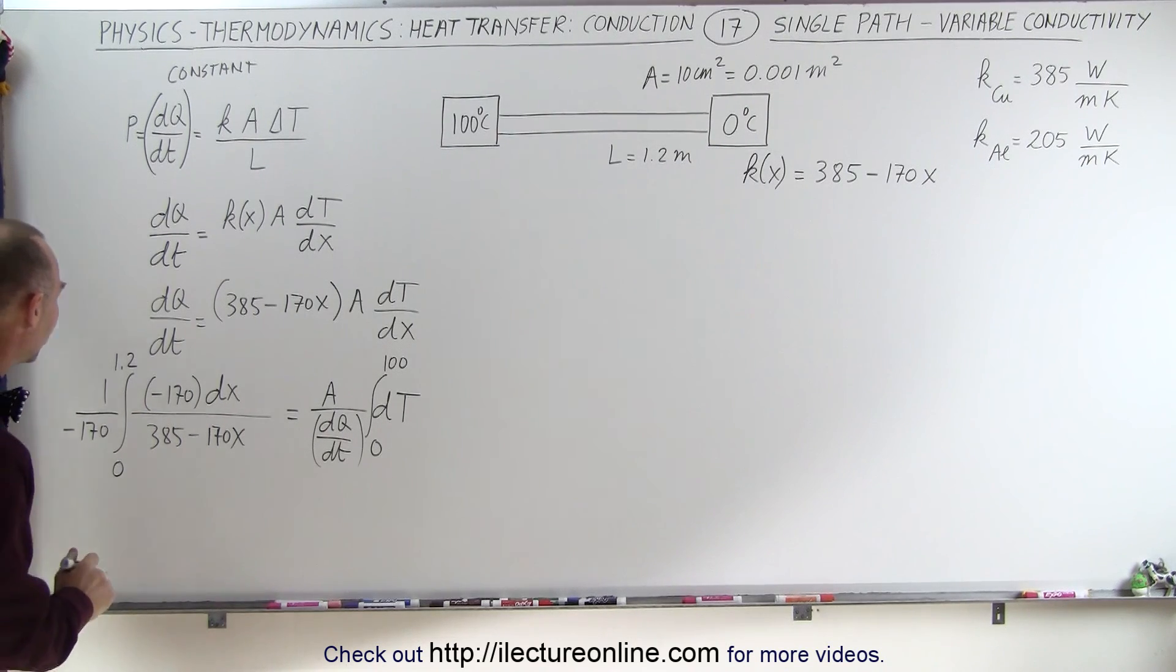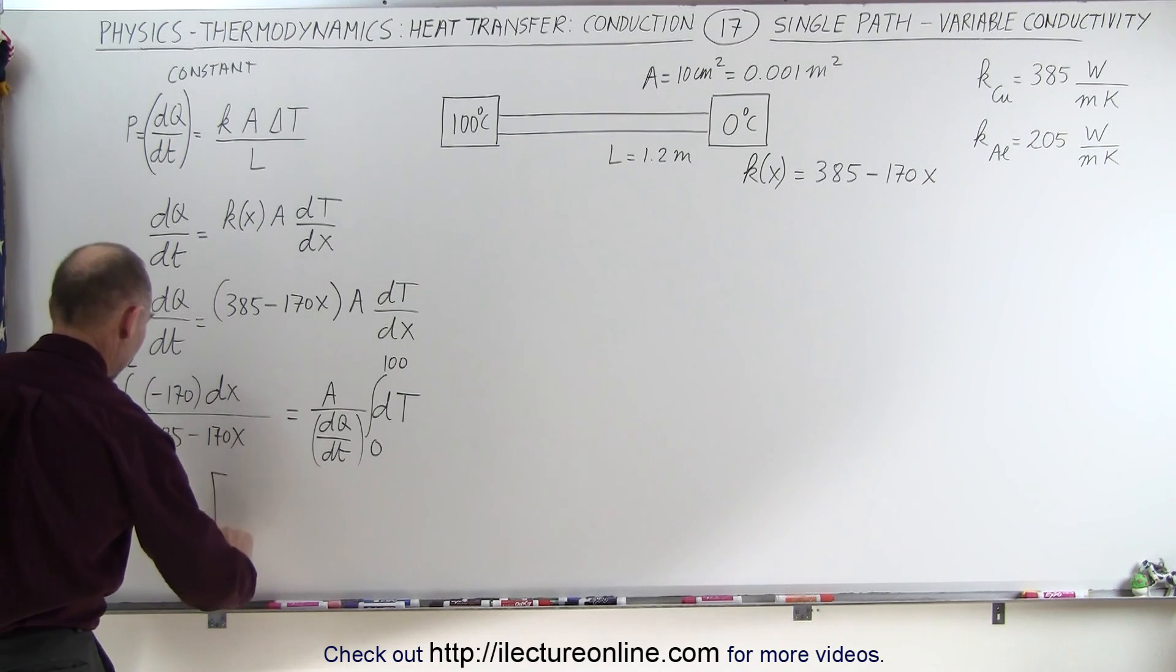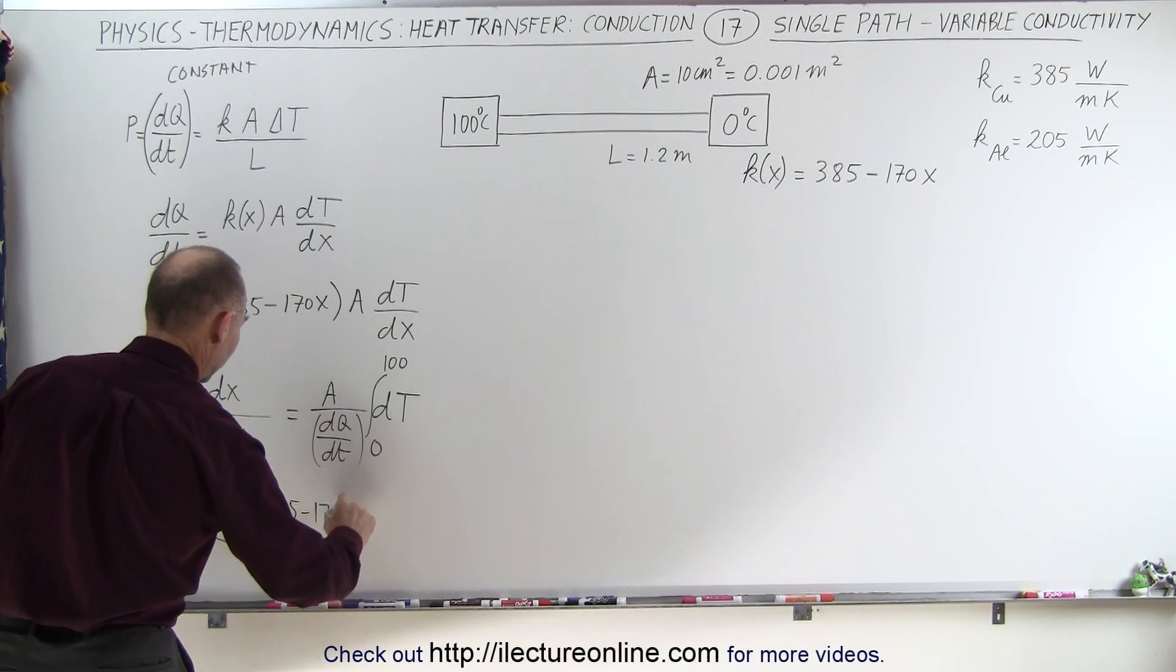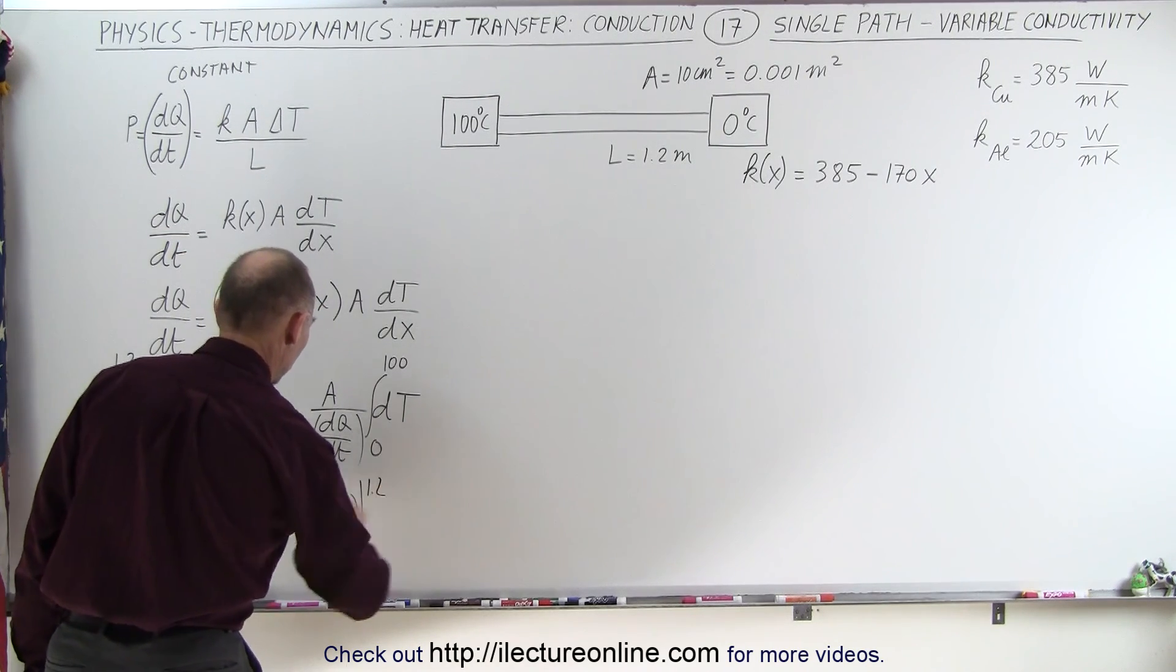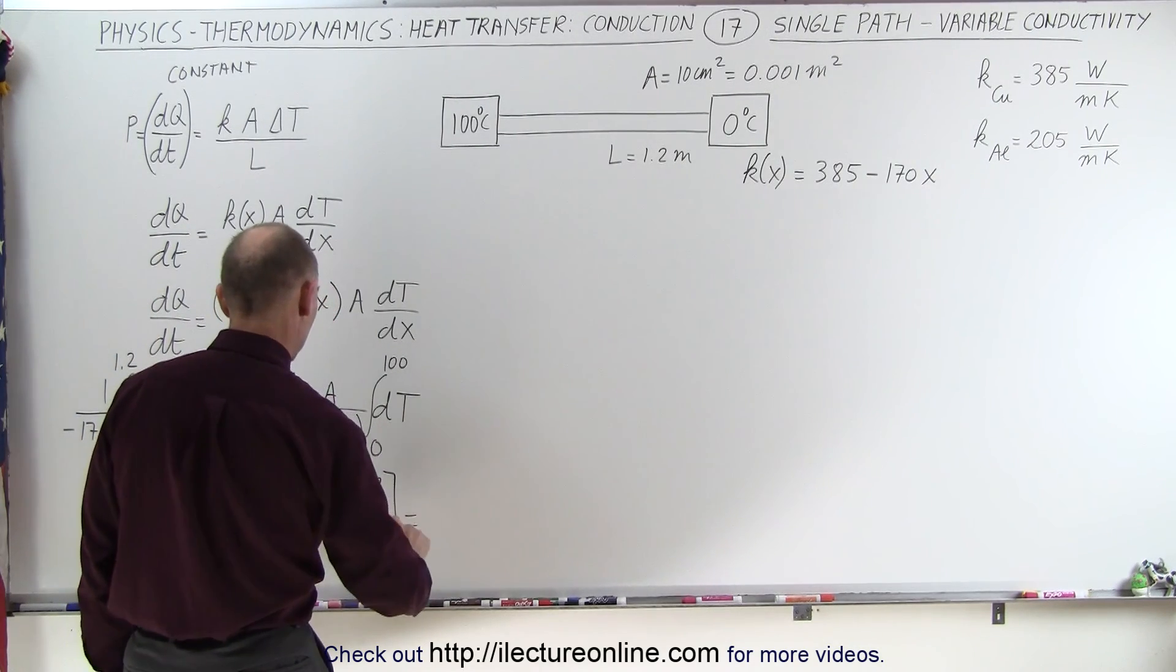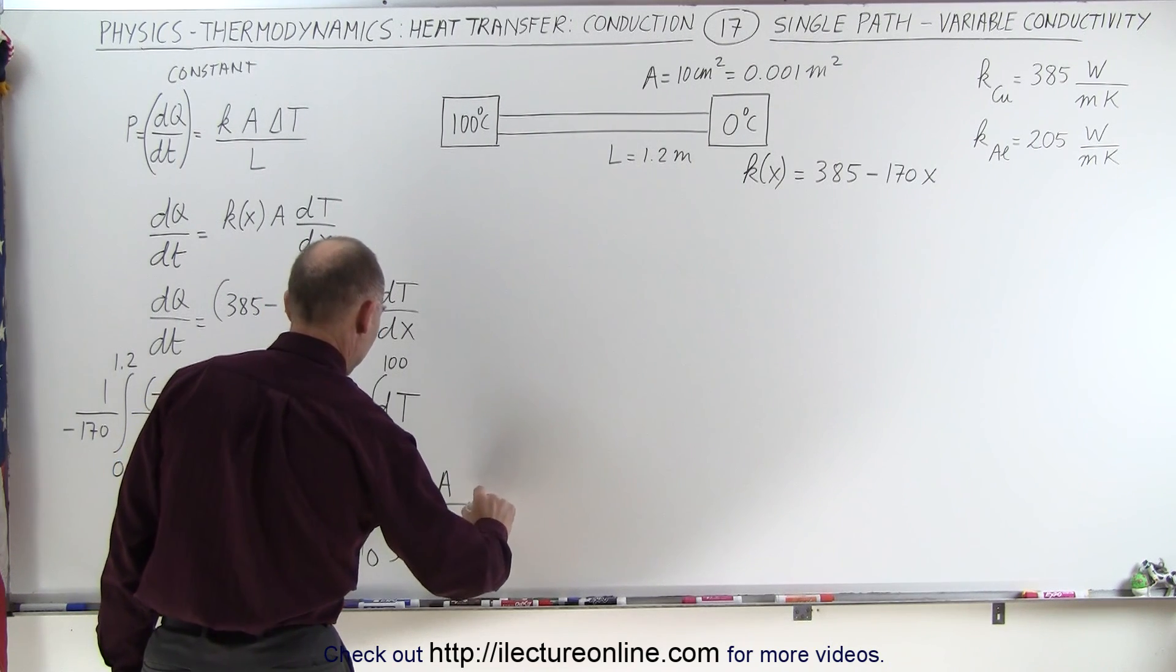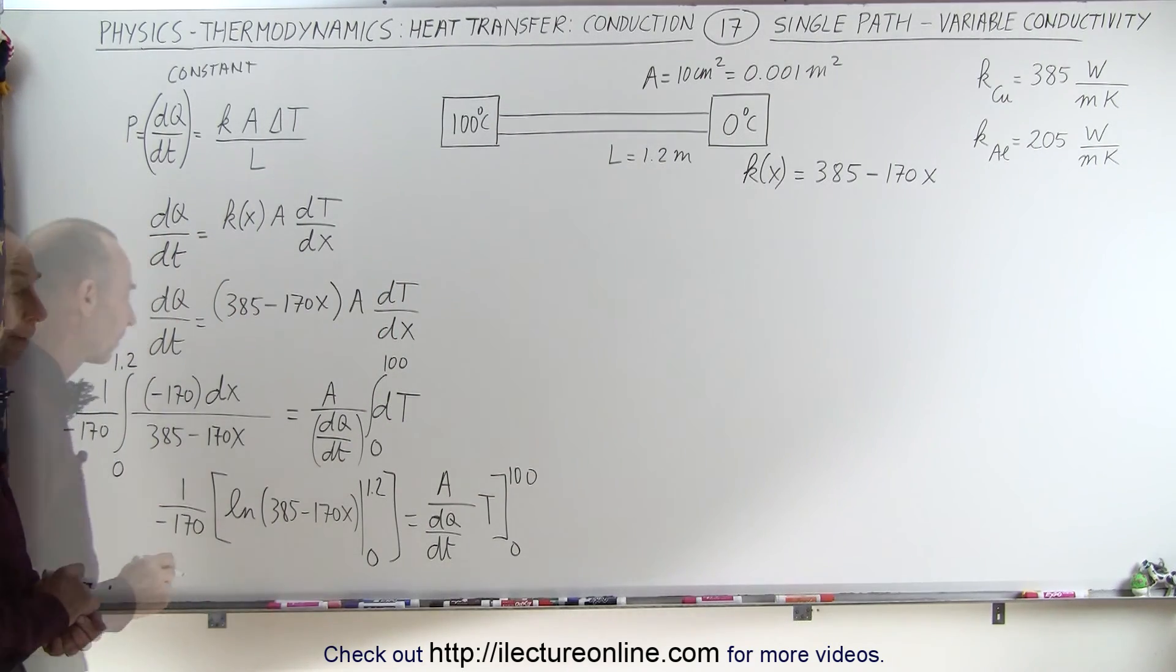We can now integrate both sides. When we integrate both sides, we get on the left side, 1 over minus 170, times the natural log of 385 minus 170x. We're going to evaluate this from 0 to 1.2. And that is equal to, on the right side we have A divided by dQ/dt, times T evaluated from 0 to 100.